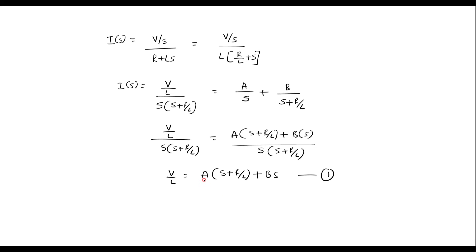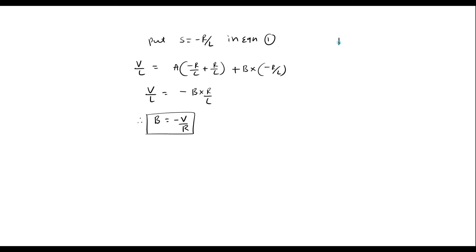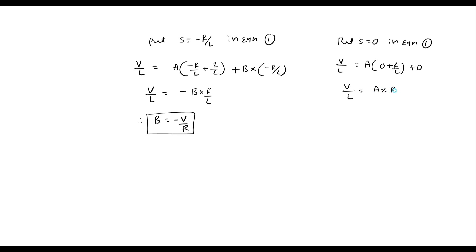To calculate A, substitute S equal to 0. We get V by L equal to A times the quantity 0 plus R by L, which gives V by L equal to A times R by L. Therefore A is equal to V by R.